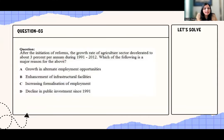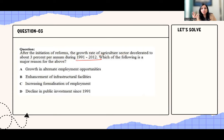After the initiation of reforms in 1991, the growth rate of agriculture decelerated to about 3% per annum during 1991 to 2012. So after the reforms, the growth of agriculture actually slowed down.